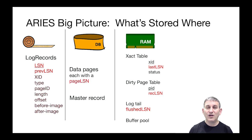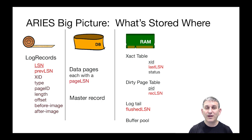Here's one slide that contains all the state of the ARIES recovery protocol. In the log, we have log records with various fields. In the database, we have data pages, each with a page LSN which is a pointer to the most recent update to that page in the log. There's also something in the database called a master record, which will allow us to recover the database after a crash. And then in memory — in RAM — we have our transaction table, our dirty page table, our log tail of log records that have yet to be flushed, our flushed LSN which tells us the last log record that was flushed to the log device, and of course our buffer pool.